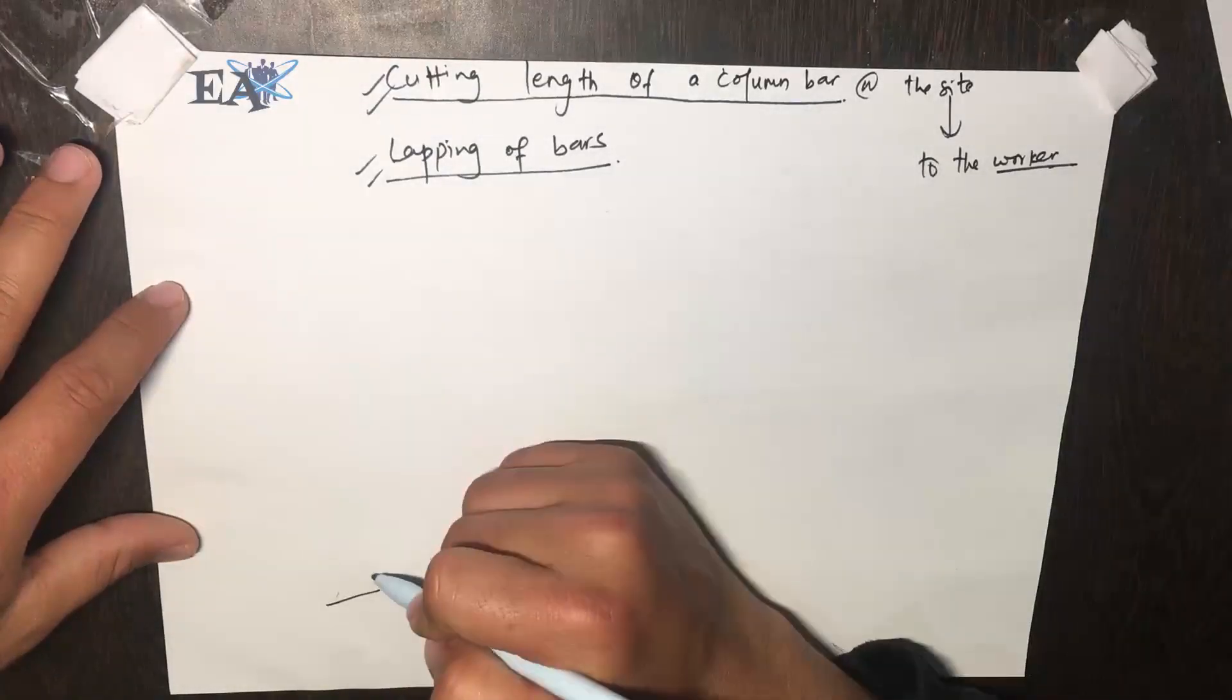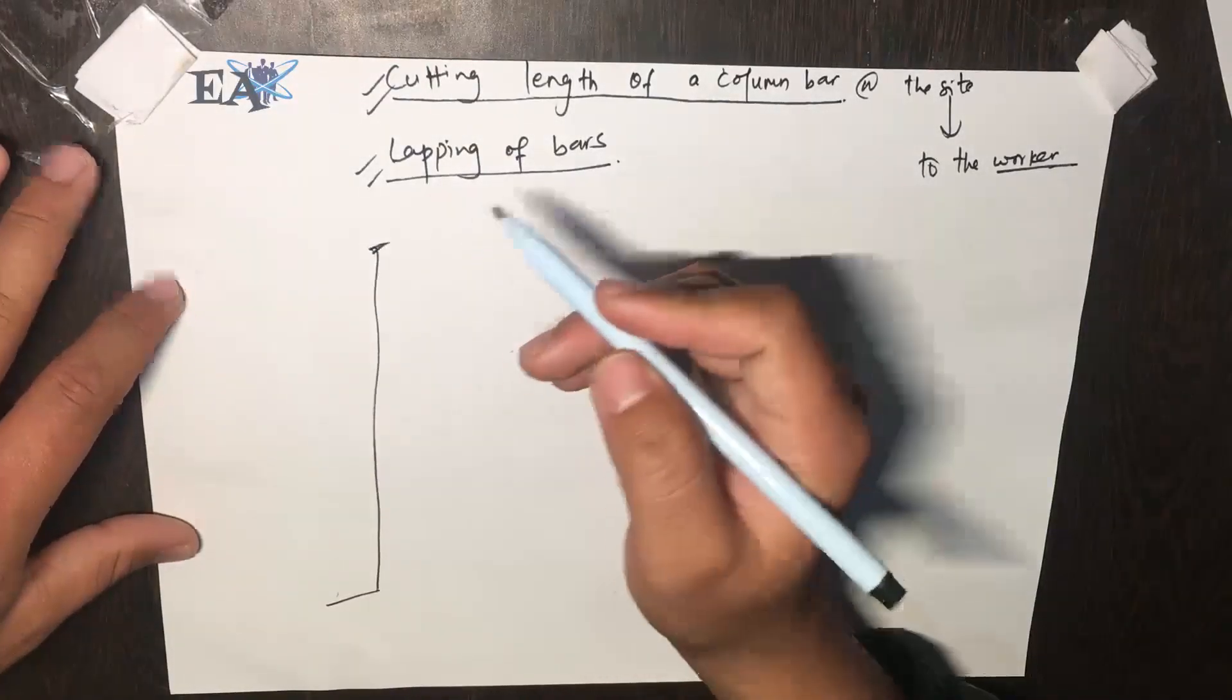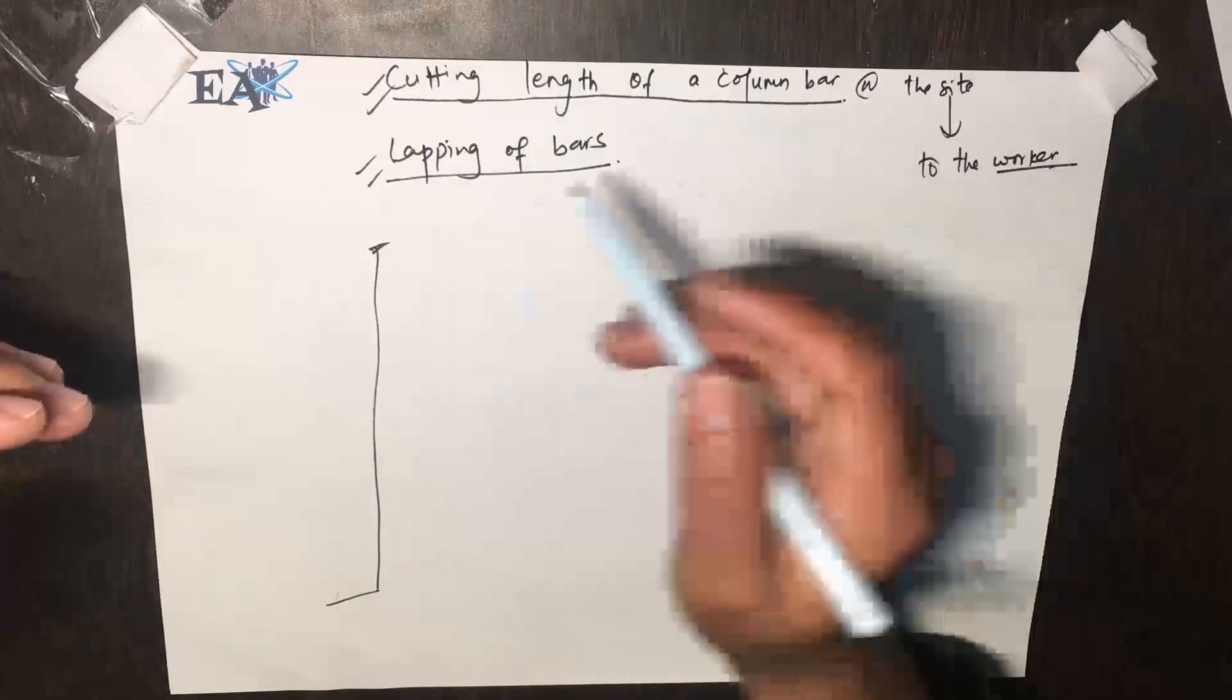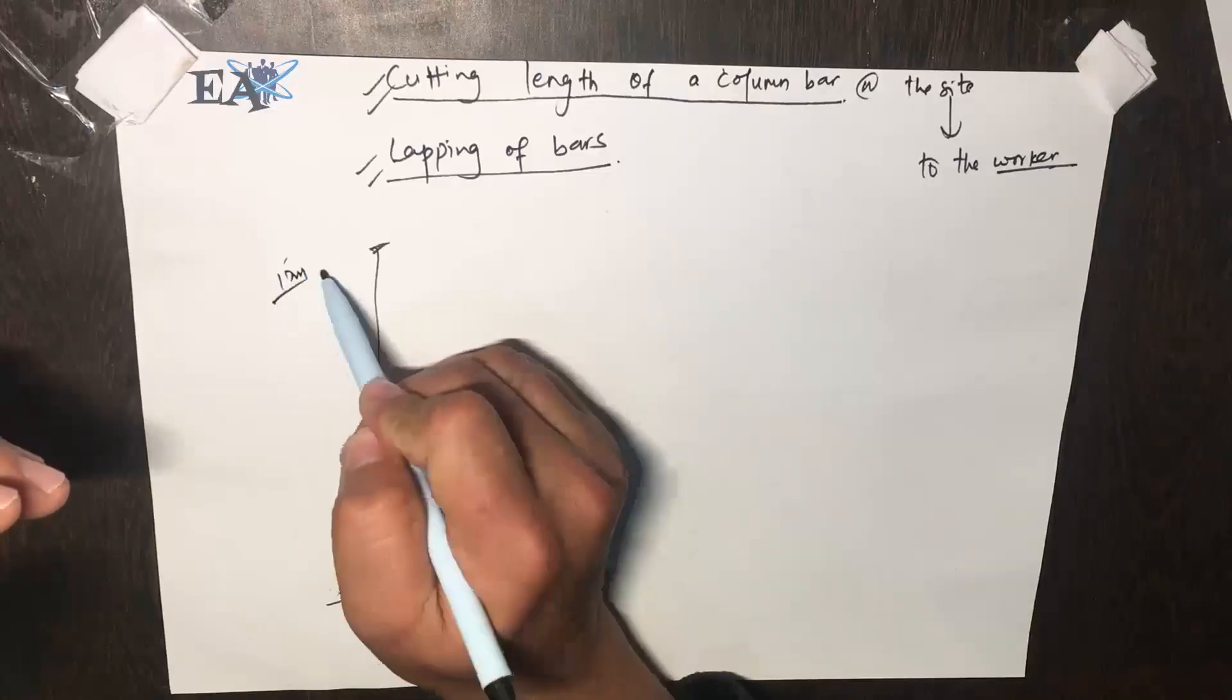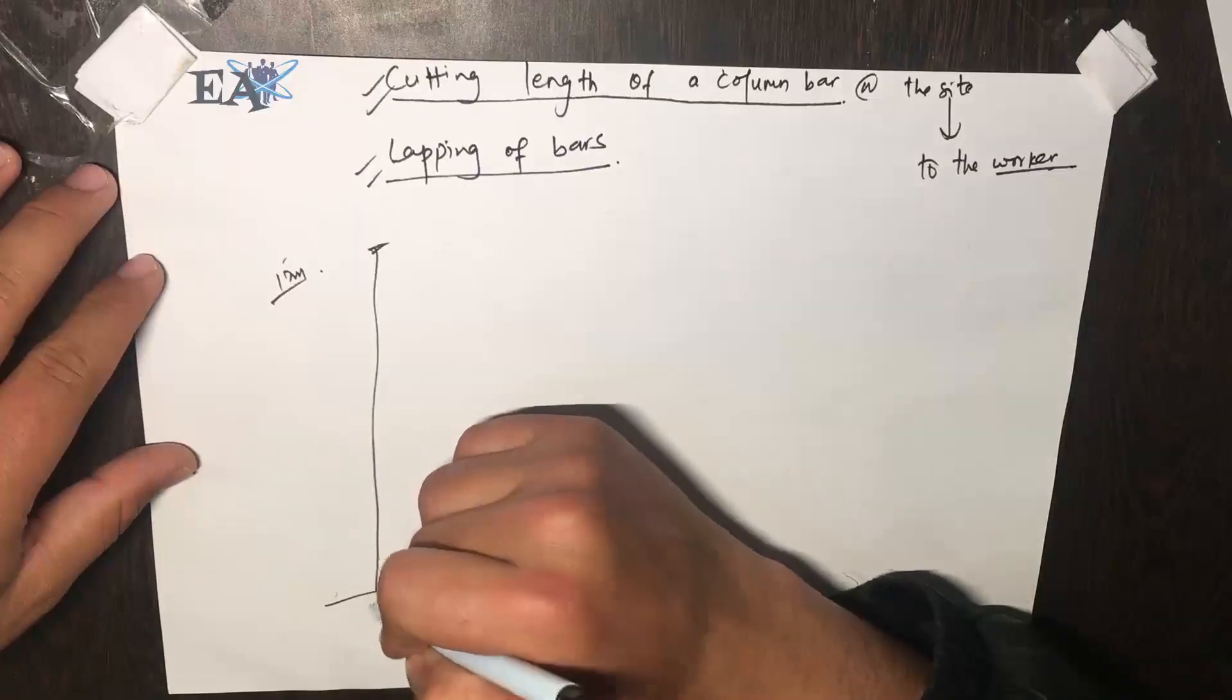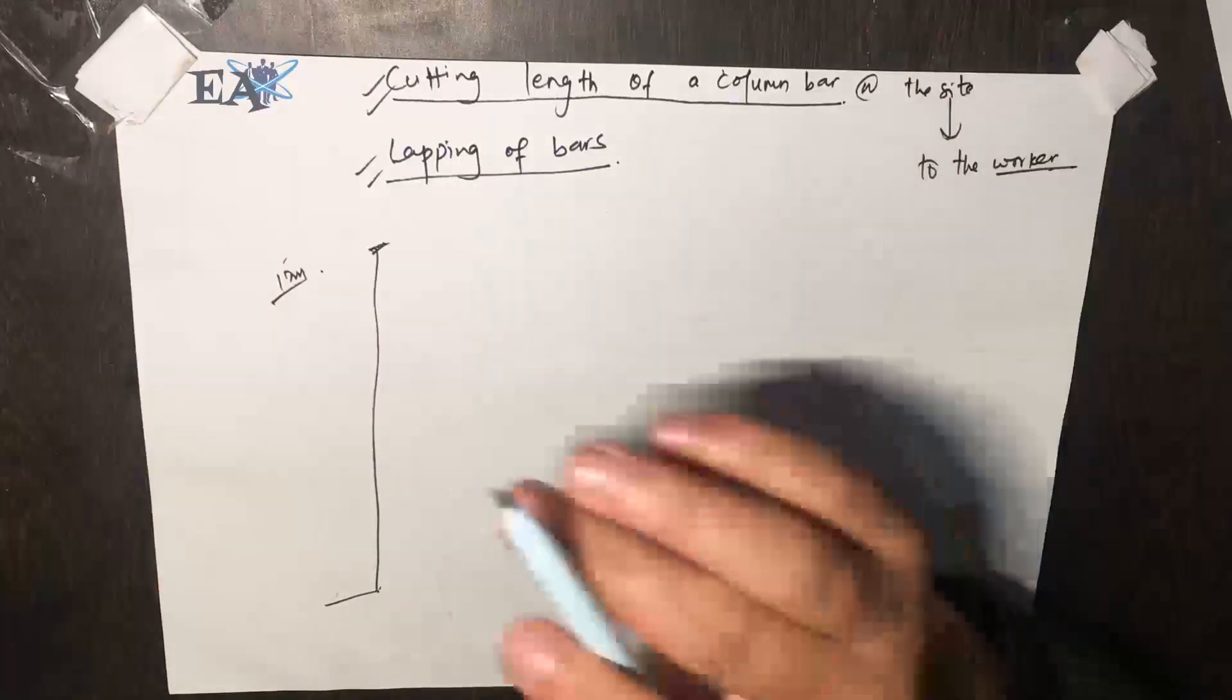But we don't have that. We have only 12 meter bars, so we need to lap two bars so that we can take the bars from footing up to the top of the building.